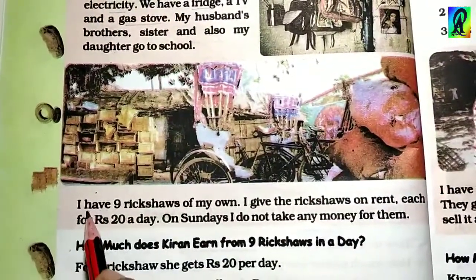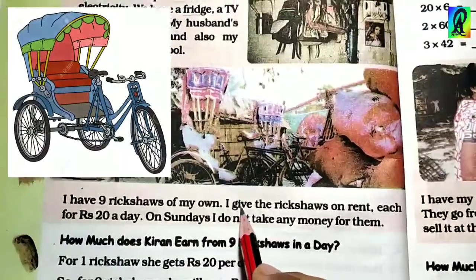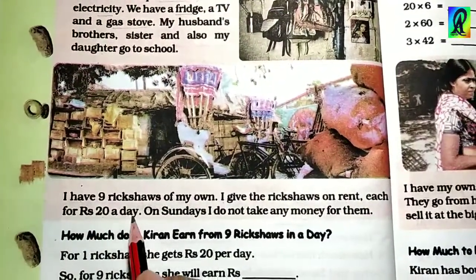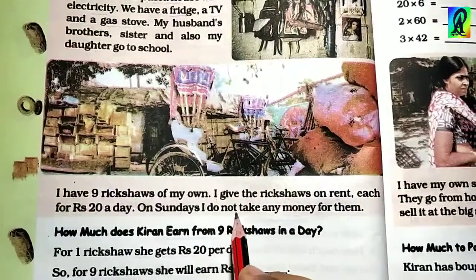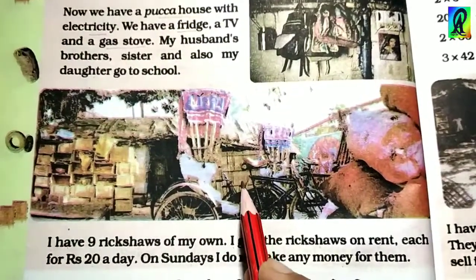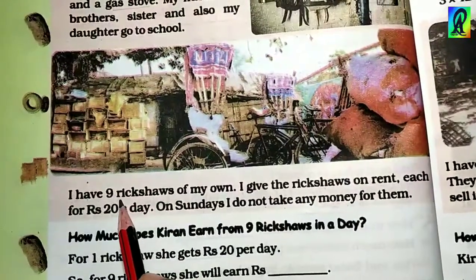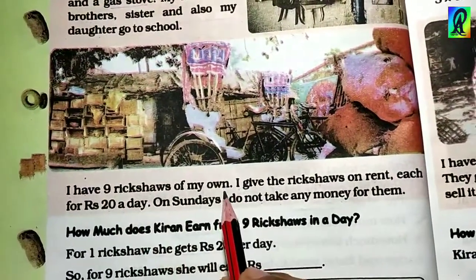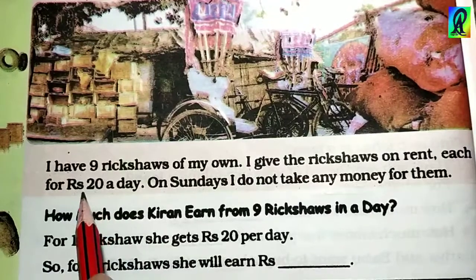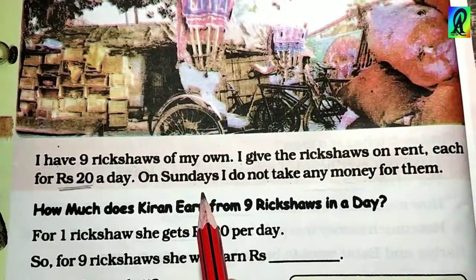Here, Kiran says, I have nine rikshaws of my own. I give the rikshaws on rent, each for rupees 20 per day. On Sundays I do not take any money for them. Here you can see it in the book. Here Kiran says, today there are nine rikshaws. They give them on rent. Each rikshaw for one day is 20 rupees. They get 20 rupees.